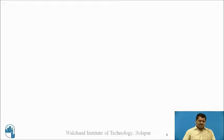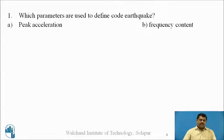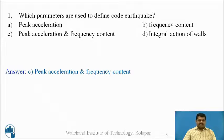My question for all students is about the most important thing we are going to discuss here — the design earthquake. Which parameters are used to define the code earthquake? Options A, B, C, and D are given. Pause the video, think about it, and give the answer. The answer is C: peak acceleration and frequency content. Both these two parameters are used to define the code earthquake.